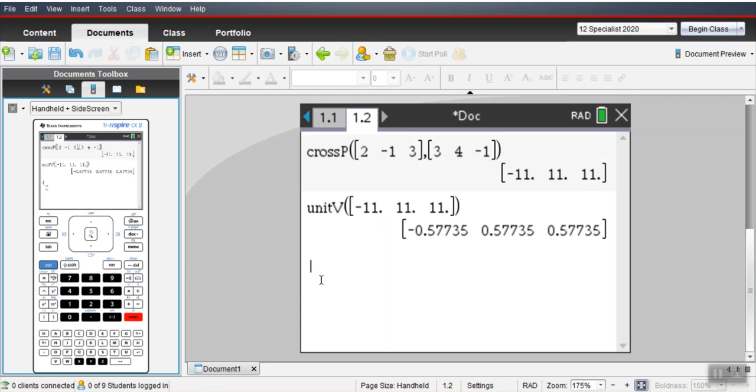Write it down. Full marks. Just don't forget to write the n hat equals and then all of those components with I, J, and K after them.